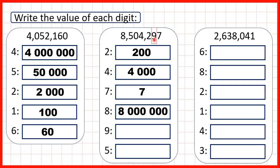The nine is in our tens so that's ninety. And the five is in our hundred thousands so that's five hundred thousand. Five with five zeros on the end because we have five digits after the five that's in our hundred thousands.